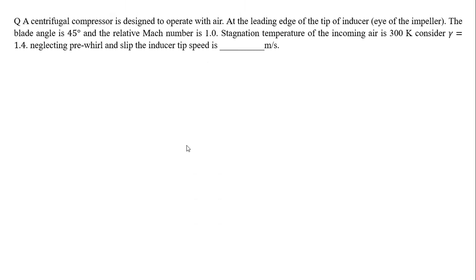The next question is about a centrifugal compressor. A centrifugal compressor is designed to operate with air at the leading edge of the tip of the inducer (eye of impeller). The blade angle is 45 degrees and the relative Mach number is 1. Stagnation temperature of incoming air is 300 Kelvin. Consider gamma = 1.4. Neglecting pre-swirl and slip, find the inducer tip speed in meters per second.